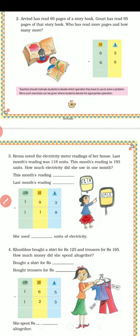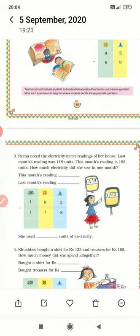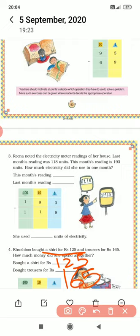Now the third question is: Khushbu bought a shirt for rupees 125 and trousers for rupees 165. How much money did she spend altogether? Total उसने कितने रुपए खर्च किये? Shirt उसने rupees 125 की और trousers rupees 165 के लिए. So what will you do? You will add them. Total money she spent — how much did she spend — that is what we need to find.